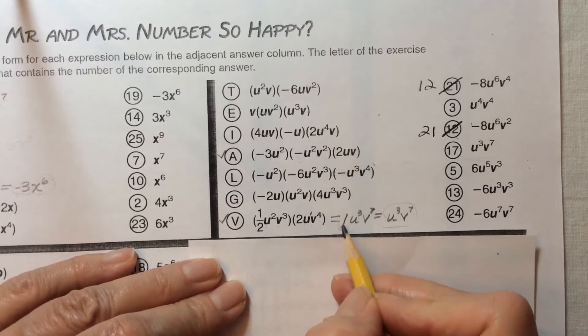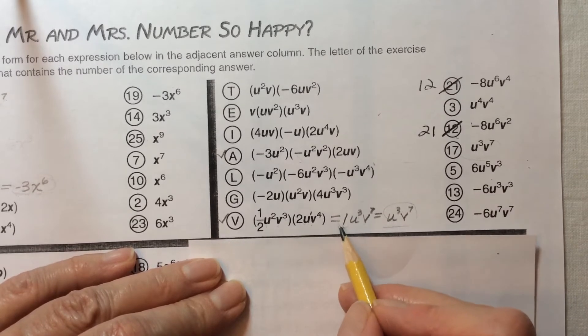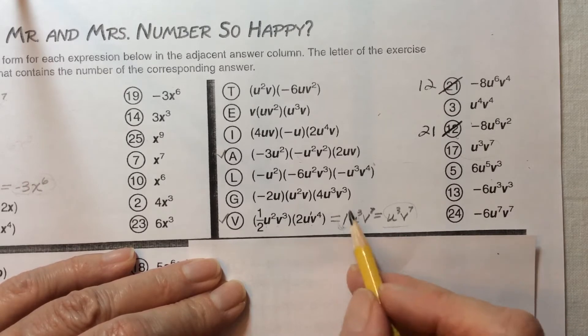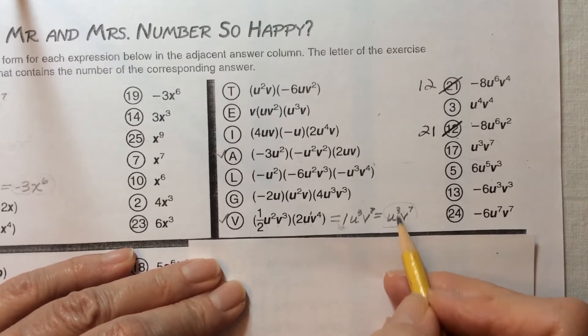Now we started out with this 1 but we know that we don't really have to write the 1 because we can always assume that there's an invisible 1. So we'll just take the 1 away and we get u³ v⁷.